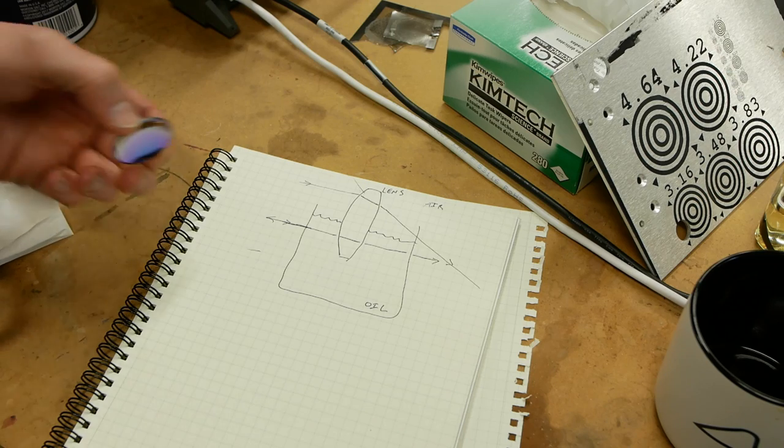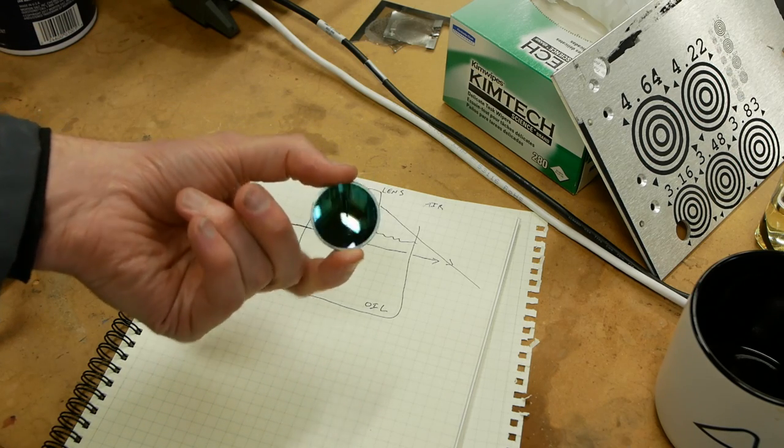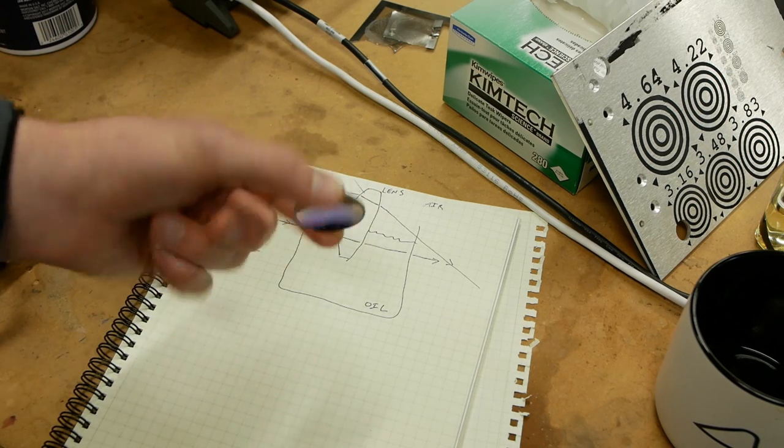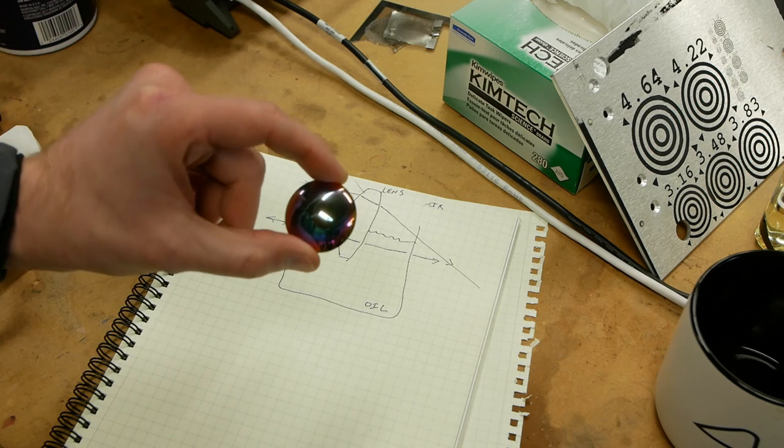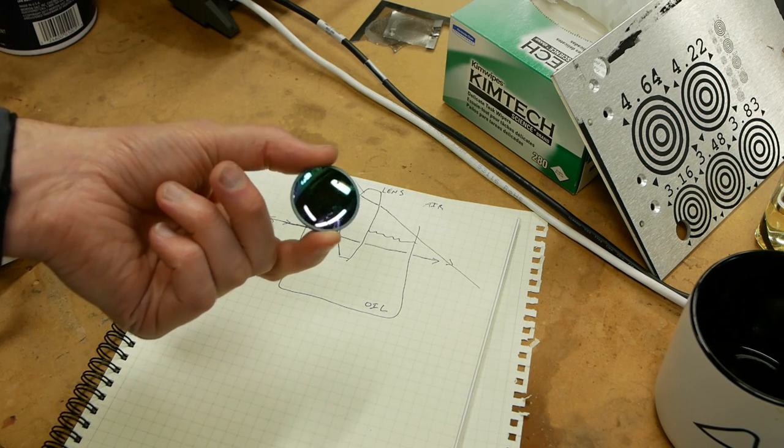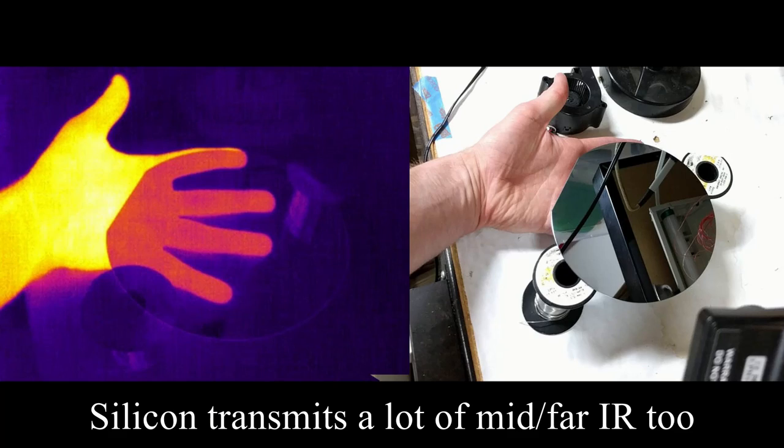And there's a really interesting outlier. Germanium has an index of four, which is, I think, the highest of all materials. The only trouble is that germanium is not transparent to visible wavelengths, but it is transparent to medium and far infrared, which is why they use this as lenses on thermal cameras.